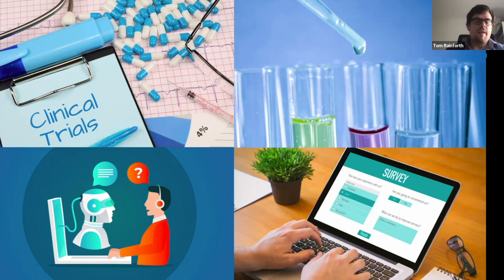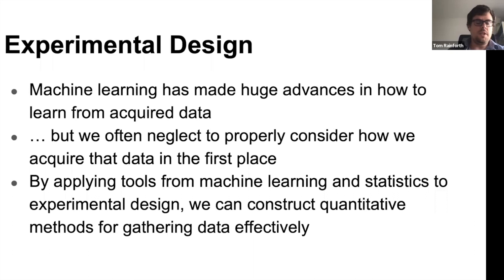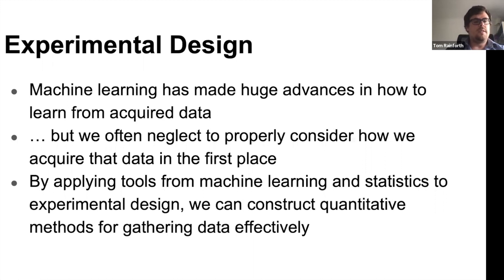We have this fundamental challenge — from clinical trials to physical experiments to online surveys — about how we actually set them up to make them as informative as possible and get the best data from them. When we do machine learning, we do all this stuff about how we use data once we've got it. But this talk is about the fact that we can also be quantitative and use machine learning tools in the gathering of that data as well, using tools from statistics and machine learning to do experimental design.